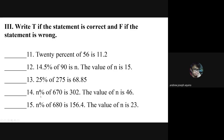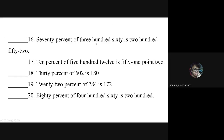Number fourteen: n percent of 670 is 302 — the value of n is 46. Number fifteen: n percent of 680 is 156.4 — the value of n is 23. Number sixteen: 70 percent of 360 is 252. Number seventeen: 10 percent of 512 is 51.2.